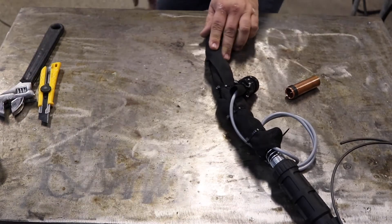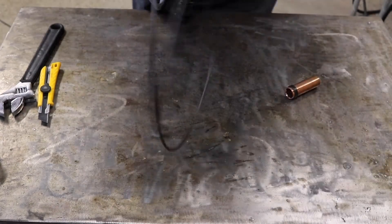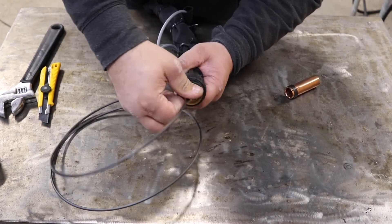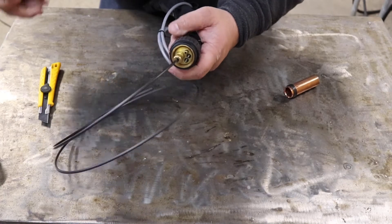Straighten the gun back out all the way. Check your fit one last time. Press it in, then tighten the liner retaining nut.